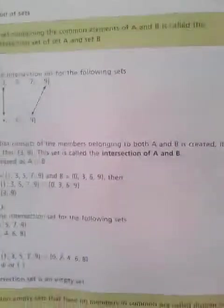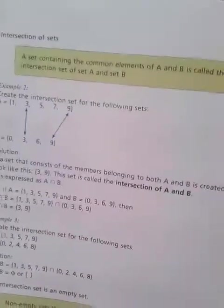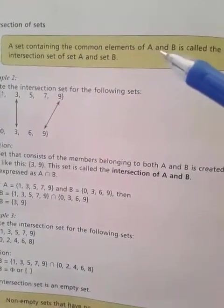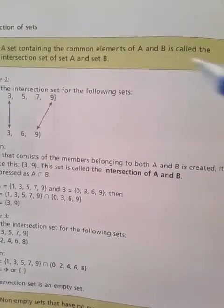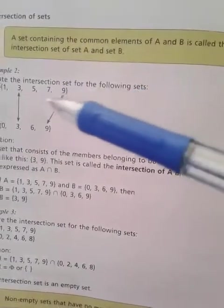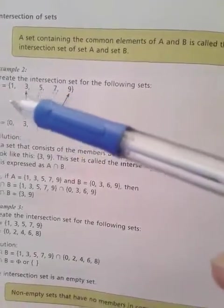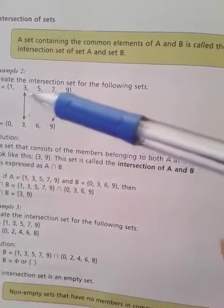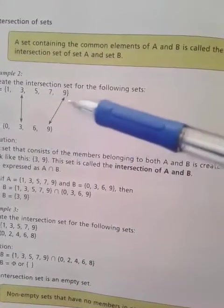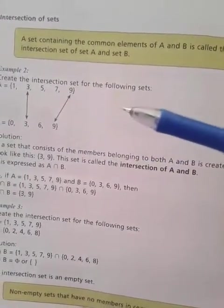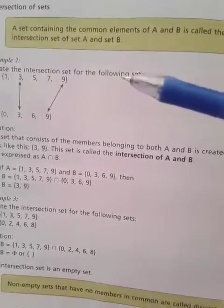Intersection of Two Sets: A set containing the common elements of A and B is called the intersection of set A and B. For example, look at set A and set B — you have to find what is common in both. Elements like two and three that appear in both sets are the common elements.